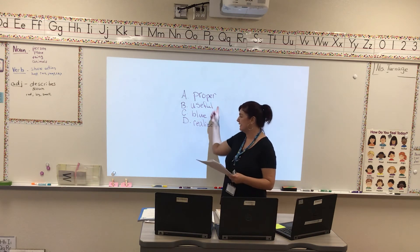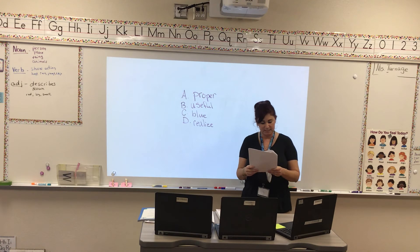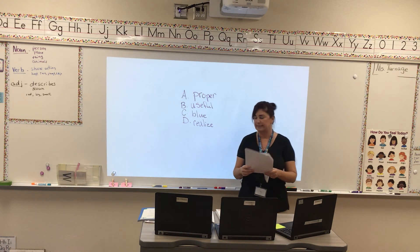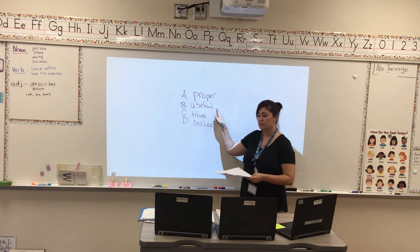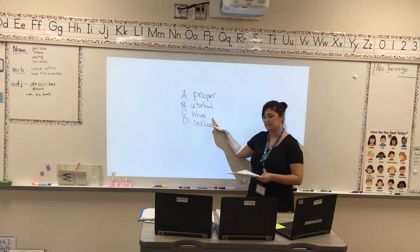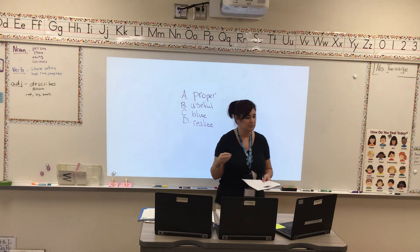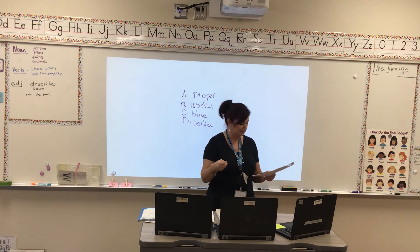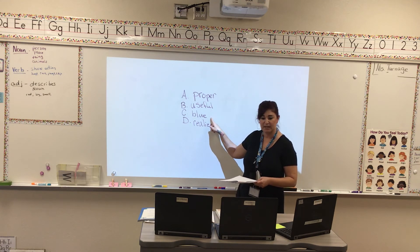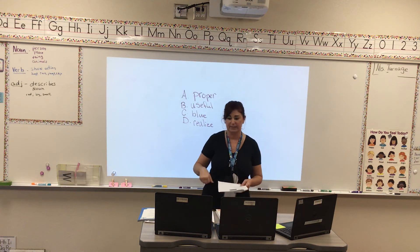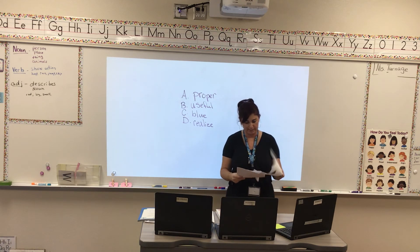We're going to use the same vocabulary words. Lately, Spoon has been feeling — is it A, proper; B, useful; C, blue; or D, realize? How has Spoon been feeling lately, Emma? Blue. So your answer should be C, blue. Very good — he's feeling very blue. Erase your boards.